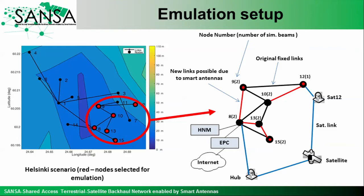If a link is congested or has a failure, the whole network suffers from these problems. The red lines illustrate other possible links that can be established if the backhaul nodes are equipped with antenna arrays that can electronically steer beams to different directions, so that the network topology can be changed. The blue lines illustrate satellite links that can be established additionally to the terrestrial backhaul links.